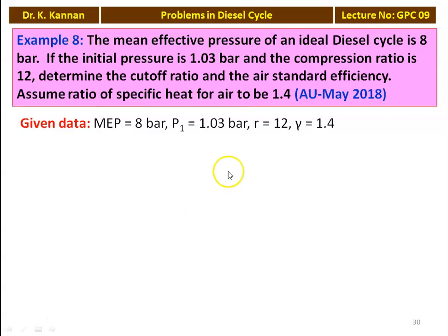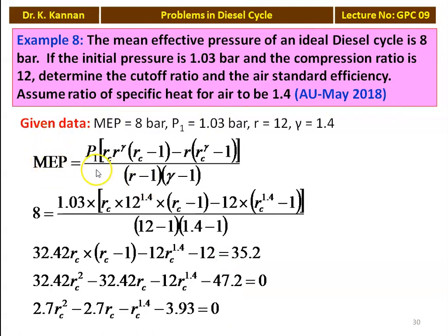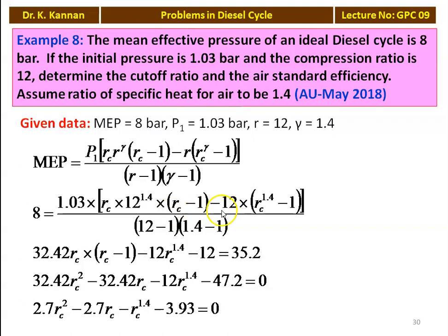We write the equation for mean effective pressure for the Diesel cycle: P1 into Rc into R to the power gamma, multiplied by (Rc minus 1) minus R into Rc to the power gamma minus 1, all divided by (R minus 1) into (gamma minus 1). Substituting the known values — MEP equals 8 bar, P1 equals 1.03, R equals 12, gamma equals 1.4 — with Rc as the unknown: 8 equals 1.03 into [12 to the power 1.4 into (Rc minus 1) minus 12 into Rc to the power 1.4 minus 1] divided by [(12 minus 1) into 0.4].